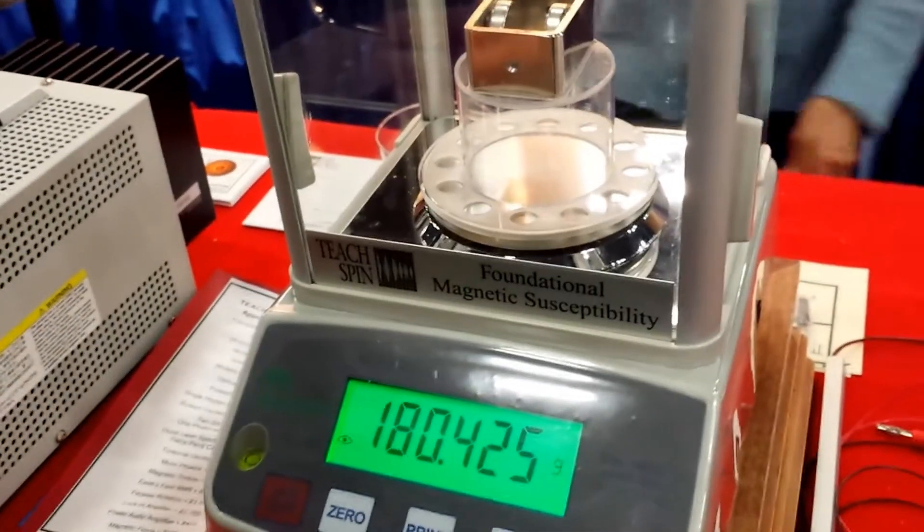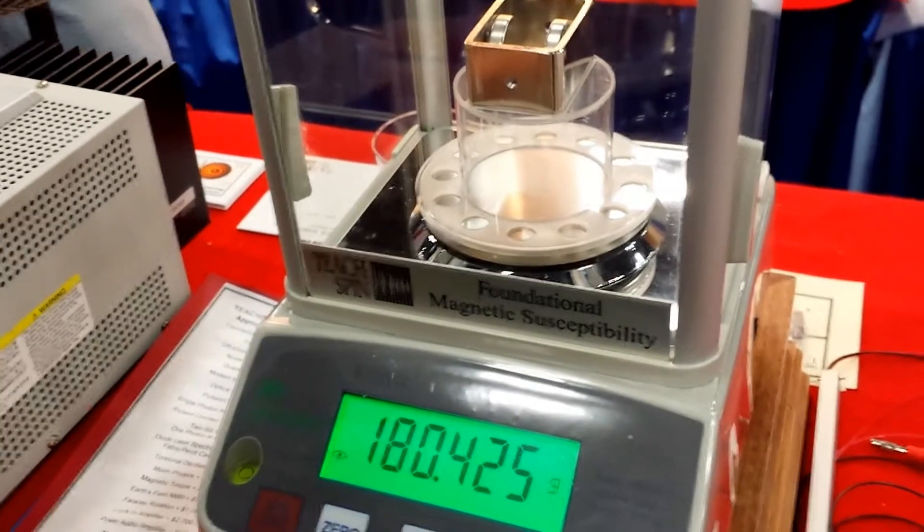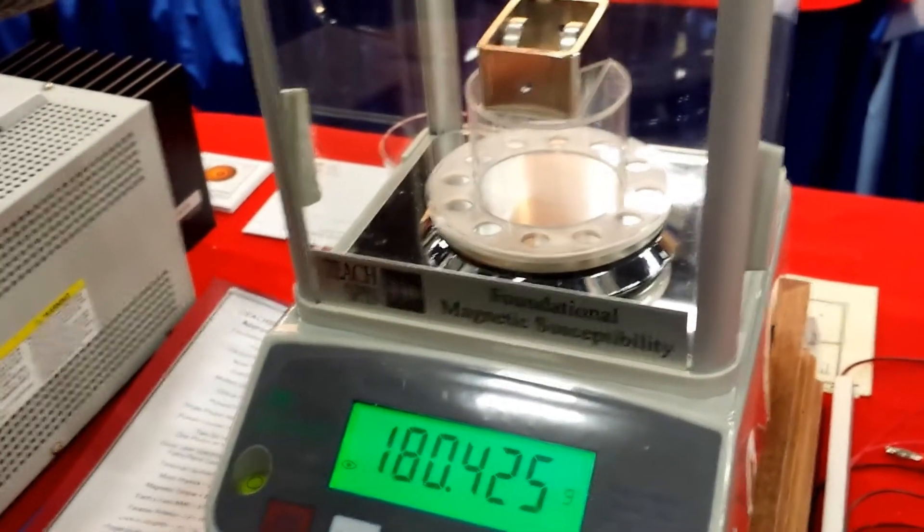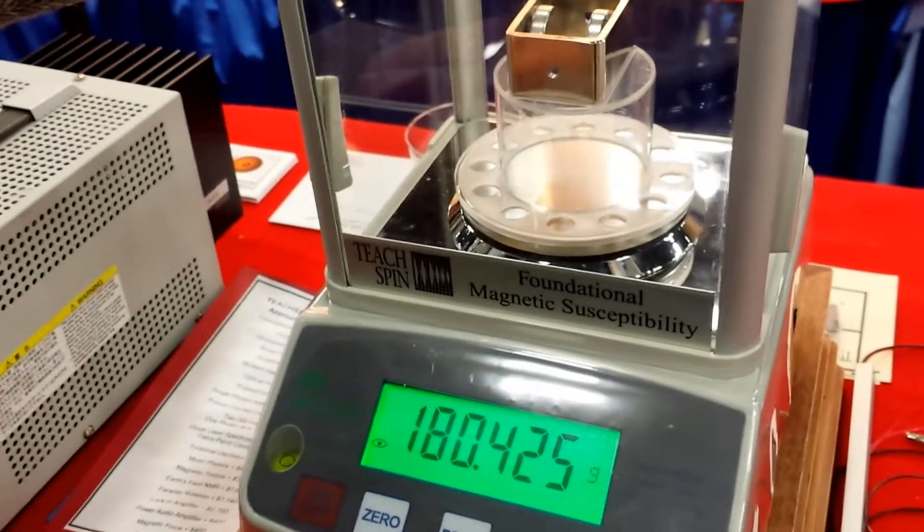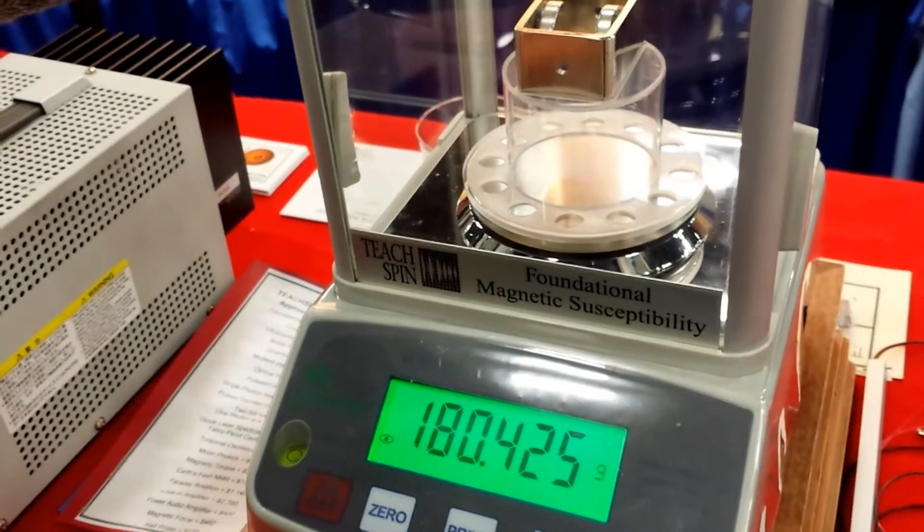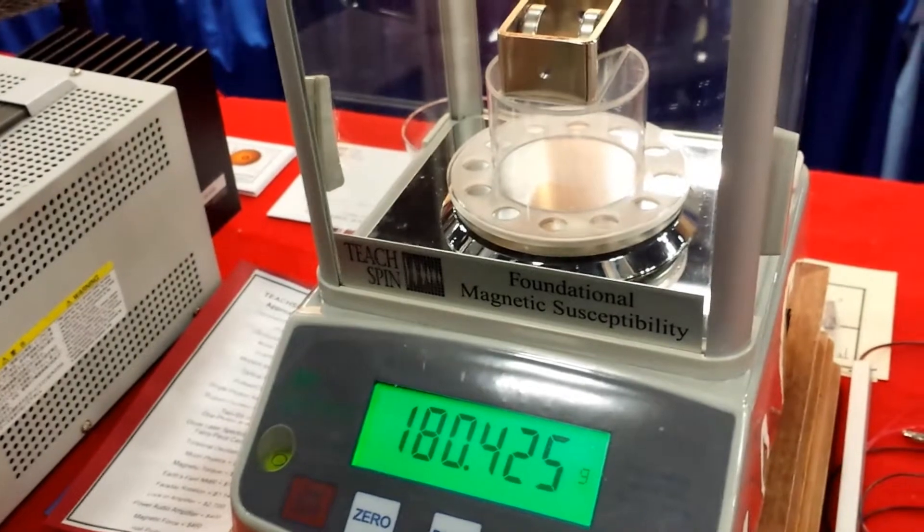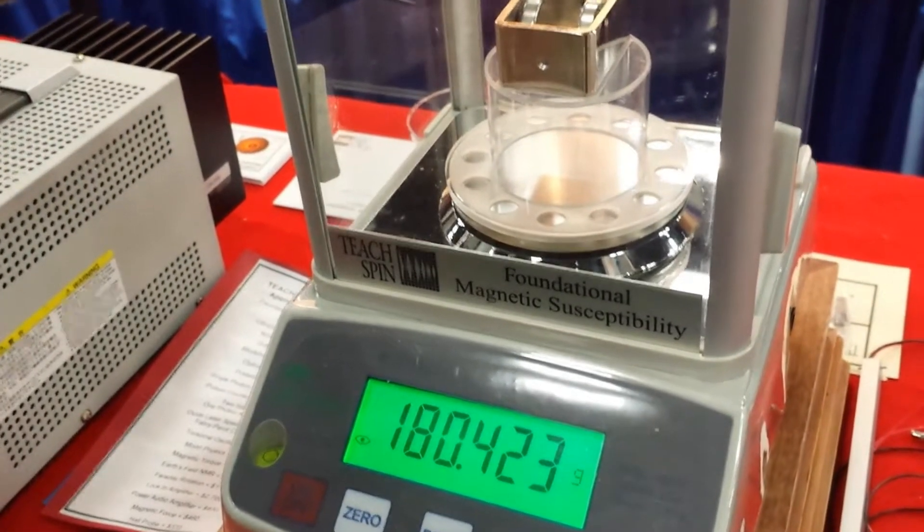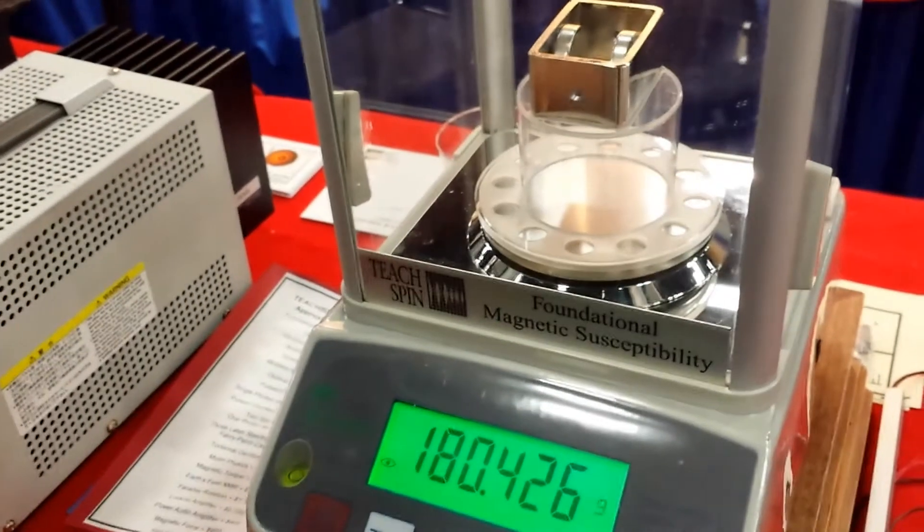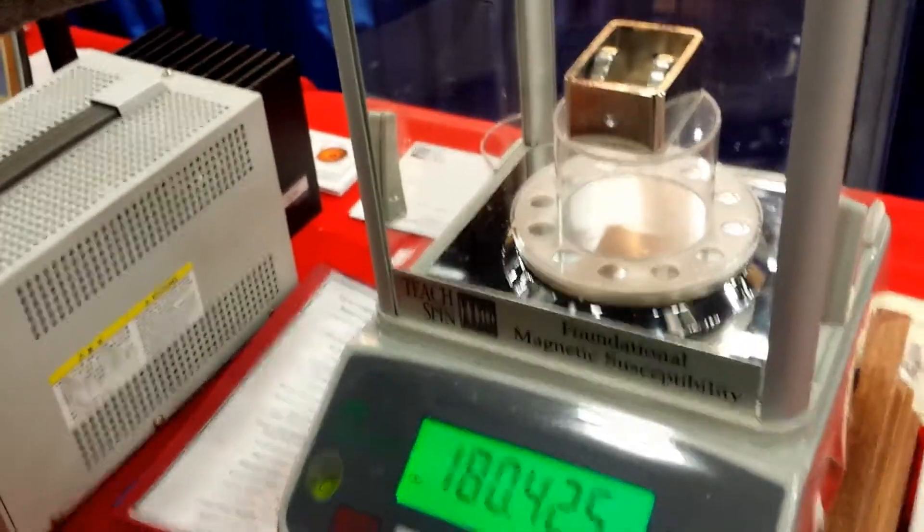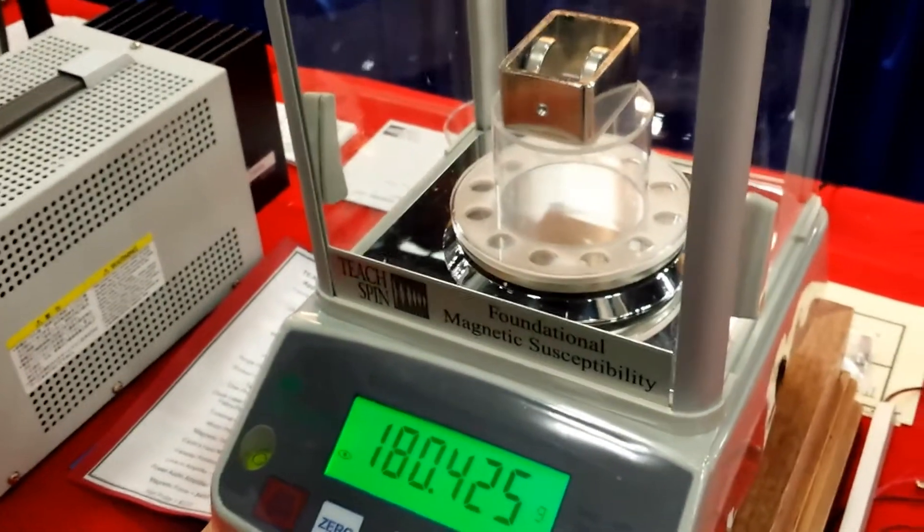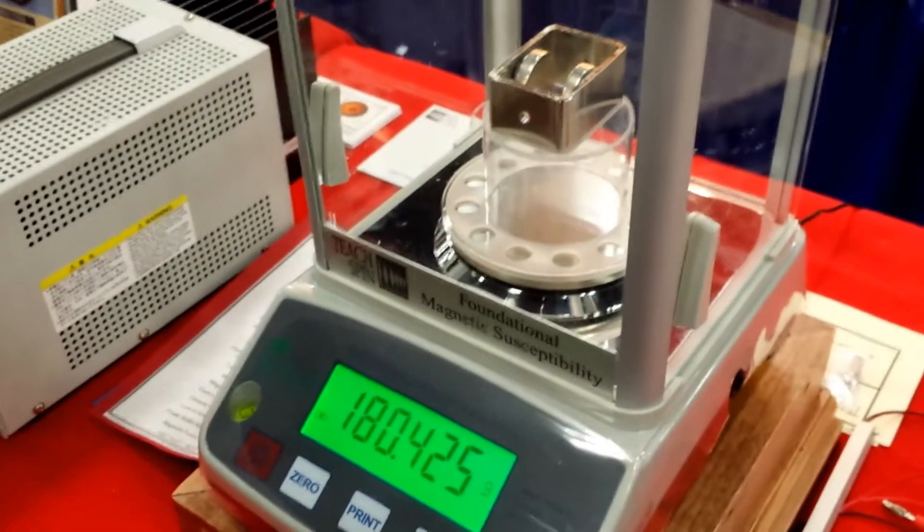So do I understand, what you're going to do is put this sample down between the magnets and that there will be a mechanical force applied by the magnets on the substance, which by Newton's third law will exert another force on the frame and that will then increase the apparent weight of the frame as far as the scale is concerned. That's right. It's a very simple mechanical demonstration of this magnetic force.